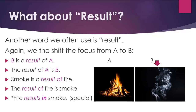Another word we often use is result. Again, we shift the focus from A to B. B is a result of A. The result of A is B. For example: smoke is a result of fire. The result of fire is smoke. In English, we have a special case with 'results in': fire results in smoke. This is a special meaning which means fire causes smoke.